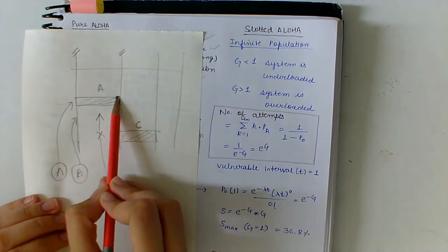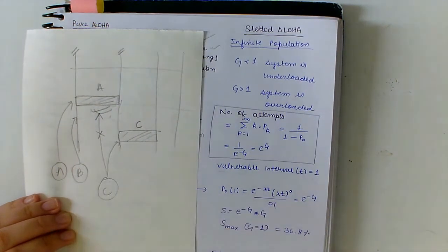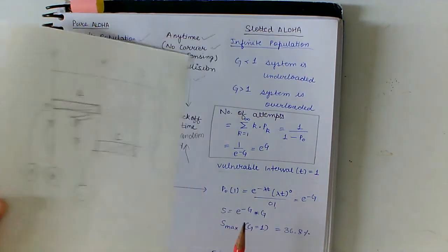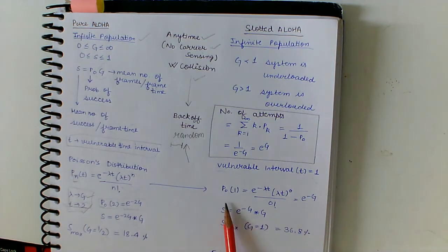So here we have to wait for the next time interval. So here the vulnerable time interval comes out to be 1T. We don't want anything to come in between, only this time slot.